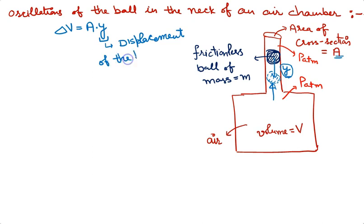Displacement of the ball from its equilibrium position. Equilibrium position is also called mean position.